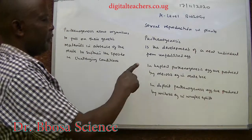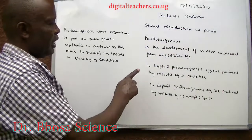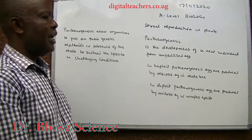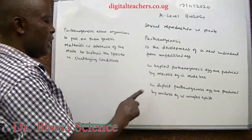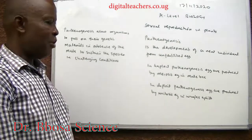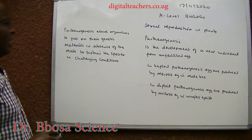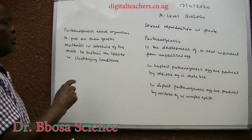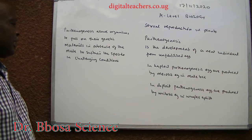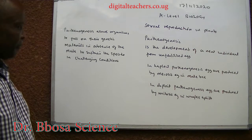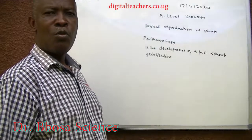Parthenogenesis is the development of a new individual from an unfertilized egg. In haploid parthenogenesis, eggs are produced by meiosis — for example, in a drone bee. In diploid parthenogenesis, eggs are produced by mitosis — for example, in wingless aphids. Parthenogenesis allows organisms to pass on genetic material in the absence of the male, to sustain the species in challenging conditions.